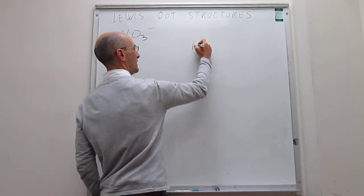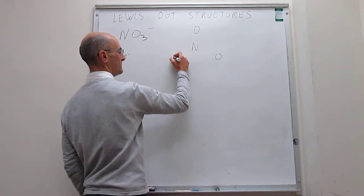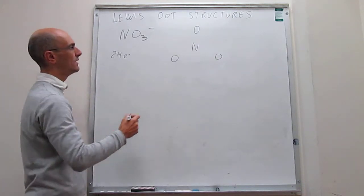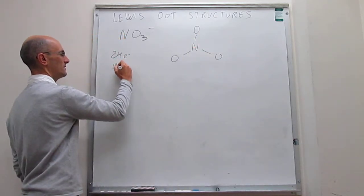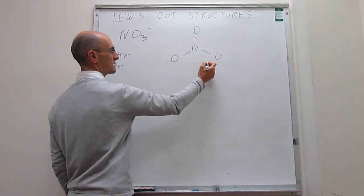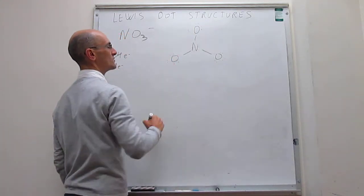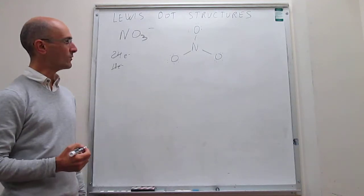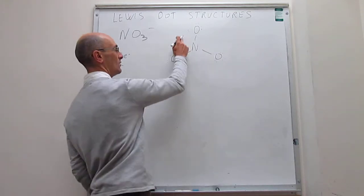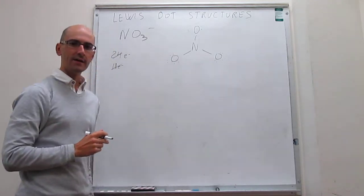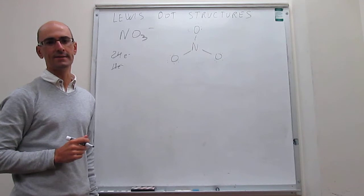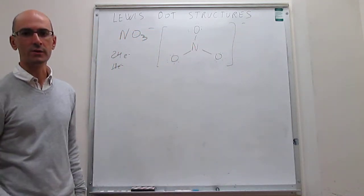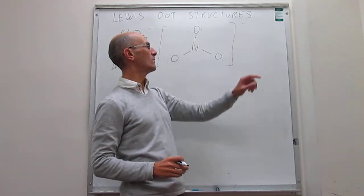We draw the molecule with nitrogen at the center and the three oxygen atoms as terminal atoms. Drawing the first three single bonds uses six electrons, leaving eighteen. Placing those eighteen as lone pairs around the terminal oxygen atoms consumes all remaining electrons. We verify octets and find that the terminal oxygens all have octets, but nitrogen only has six electrons — two, four, six — so something must happen to complete nitrogen's octet. We also note this is an ion, denoted with brackets and a negative charge in the upper right corner.